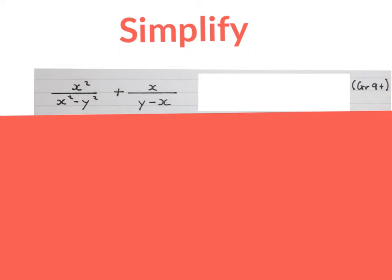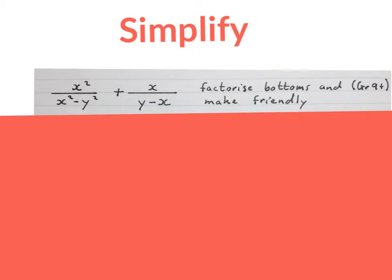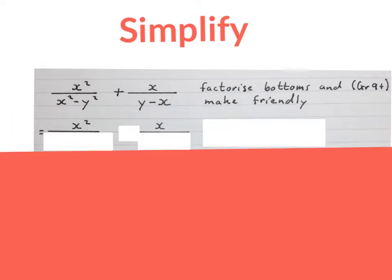Here is our second expression that we have to simplify — they give us this and say simplify. It's part of grade 9 and older. The catch here is you have to factorize the bottoms and make them friendly. So you write down the two lines and put down your numerators, then factorize the denominators.